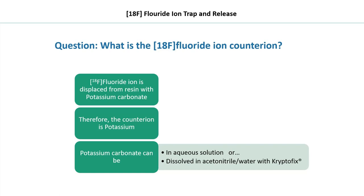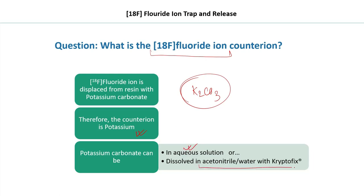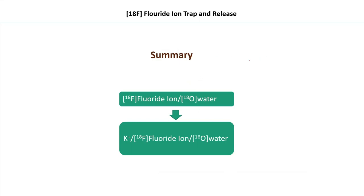The counter-ion for F-18 fluoride ion is potassium. The potassium carbonate used can be in aqueous solution or dissolved in acetonitrile-water with Kryptofix — why this is the case will be discussed in the next presentation. In summary: we begin with O-18 water, bombard it with protons to produce F-18 fluoride ions by emission of high-energy neutrons, pass the solution through an ion exchange cartridge, and obtain potassium as the counter-ion for F-18 fluoride ion along with O-18 water.